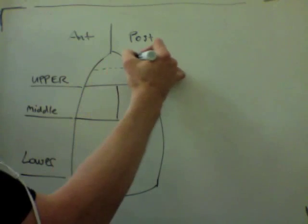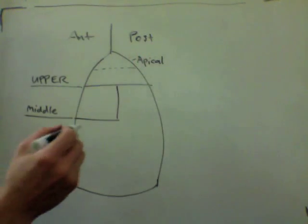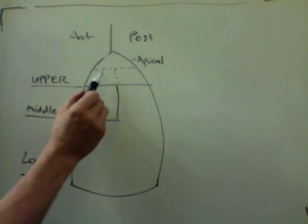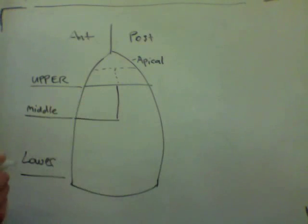So the upper lobe will divide into an apical segment, so there's a right and left apical, and then we'll divide it into anterior and posterior upper lobes, right and left.